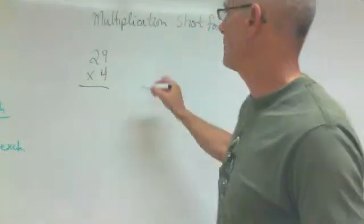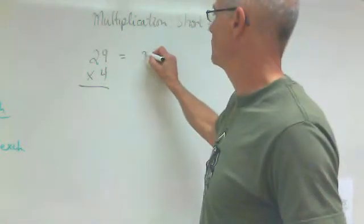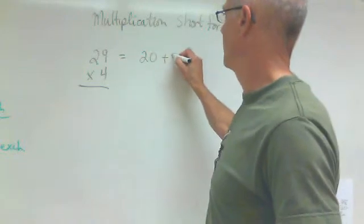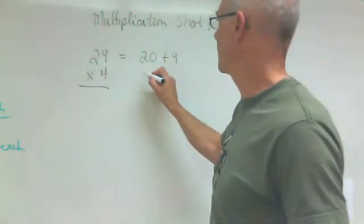So we have to expand this 29 into 20 plus 9 and then we're going to multiply each one of them times 4.